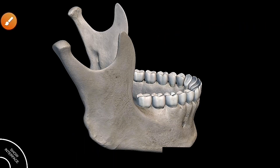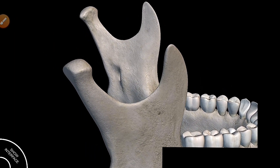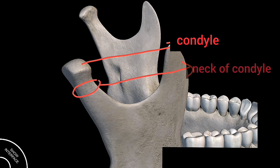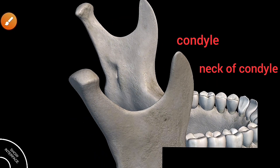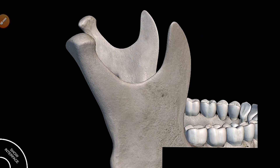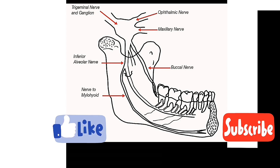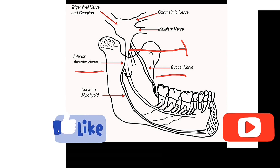The condyloid process is thicker than the coronoid process. It has two portions: the condyle and the constricted portion called the neck of the condyle. The condyle is convex and articulates with the articular disc of the TMJ. The nerve supply is provided by the mandibular nerve, which is a division of the trigeminal nerve, and it has many branches that supply the mandible, including the buccal nerve and the inferior alveolar nerve.